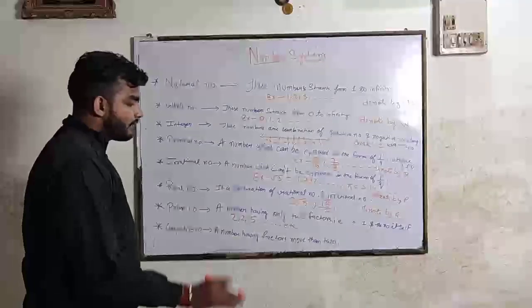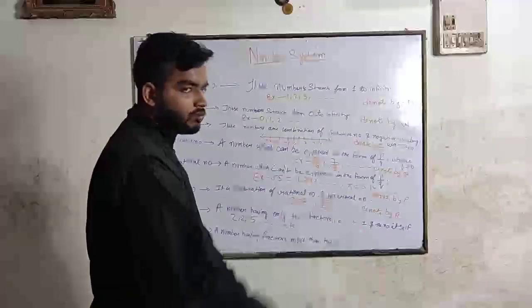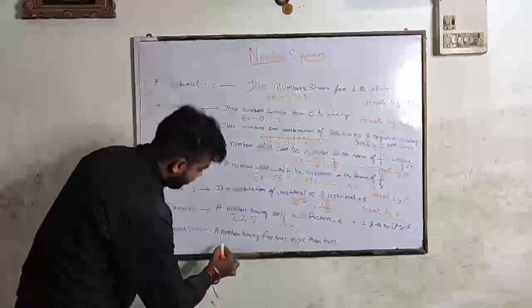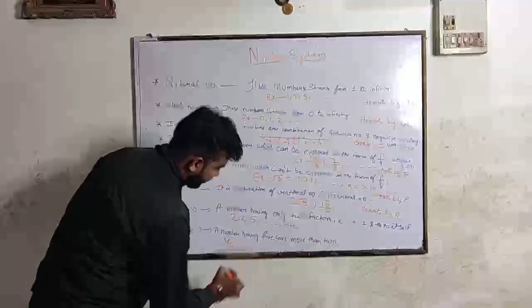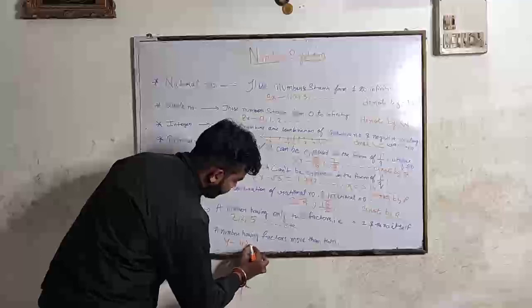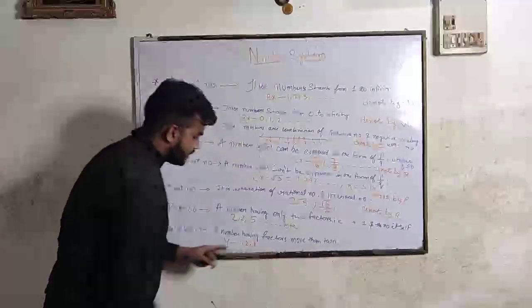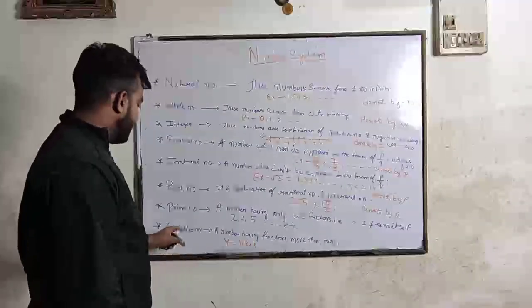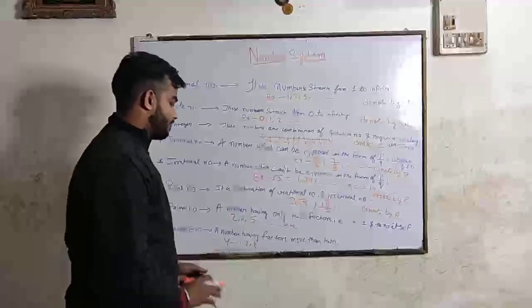Composite number. A number having a factor more than 2, which means 4, which is fact, which is divisible by, in the table of 1, 2, and 4, which is 3 factors. And it is a composite number. Now clear?